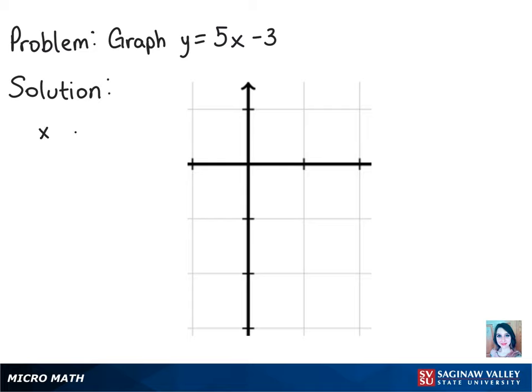So we can get our table here, and we know that the x-intercept has 0 for y, and that the y-intercept has 0 for x. So these will be your two points.